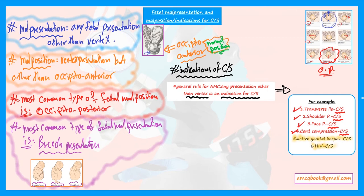Focus on these last two important indications: active genital herpes requires caesarean section, and women infected with HIV require caesarean section. The most common indication for caesarean section overall is a previous caesarean section.